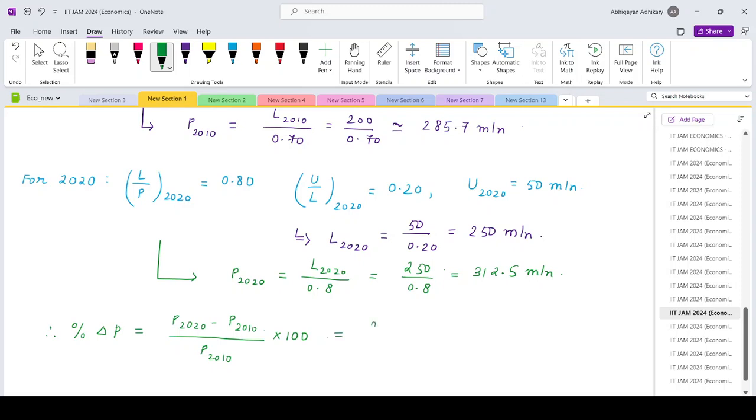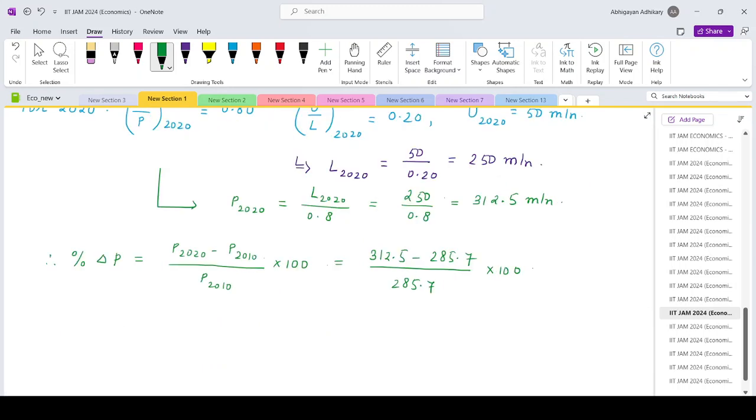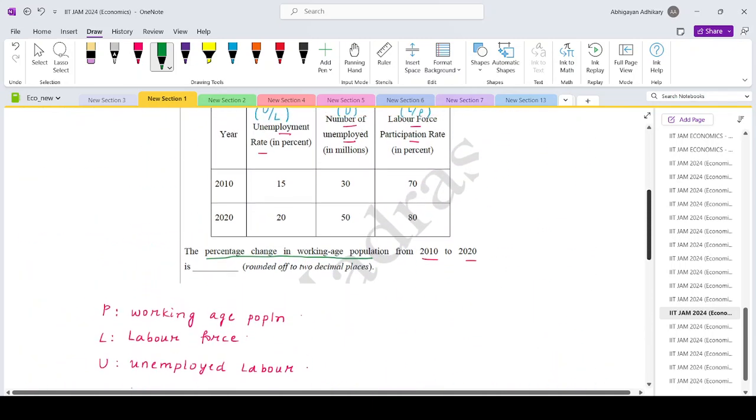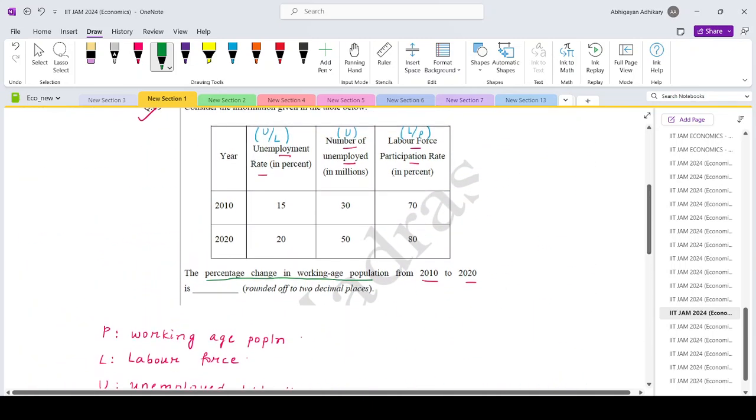So that is basically 312.5 minus 285.7 divide by 285.7 into 100. So that would be 9.38.